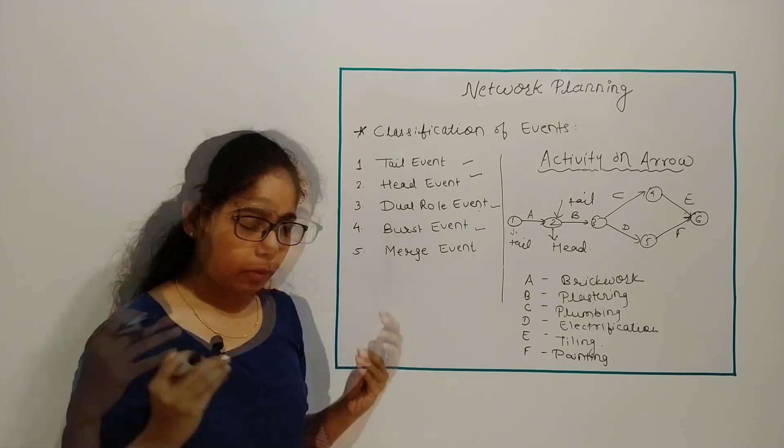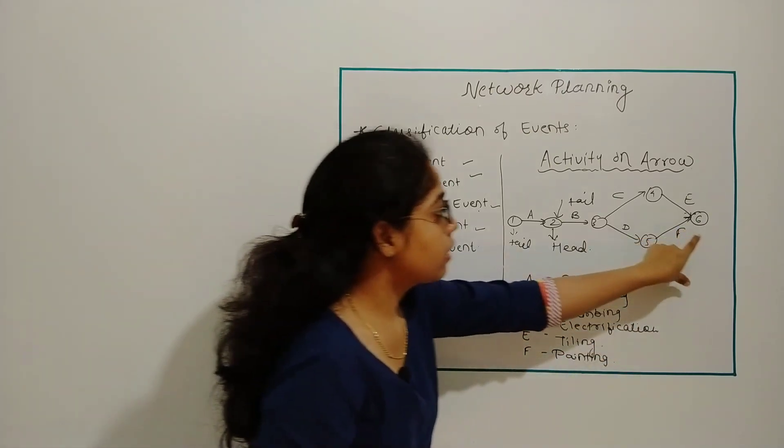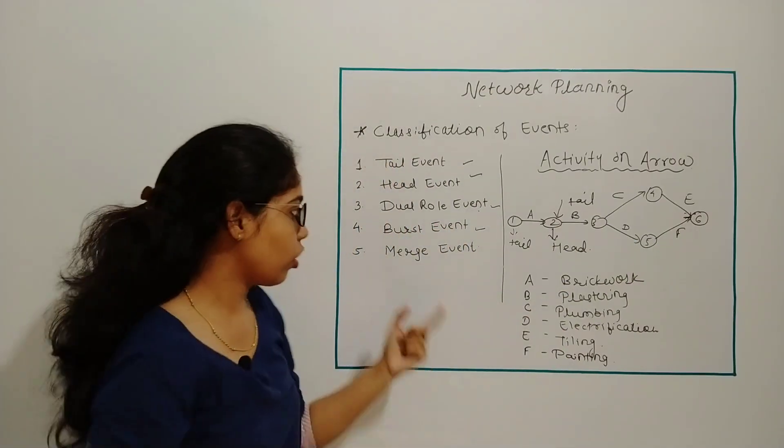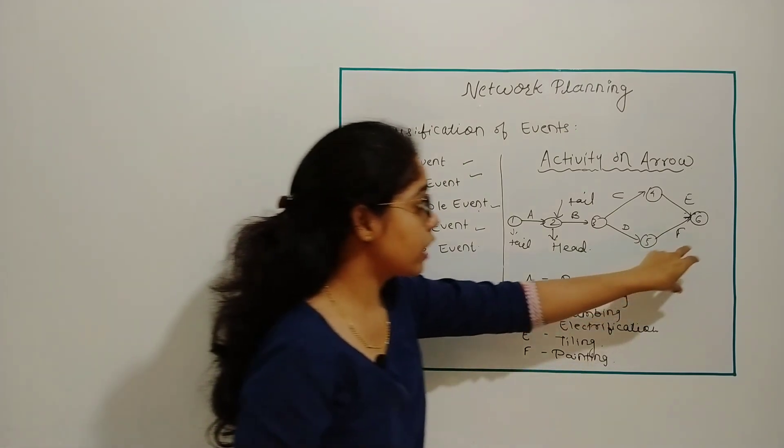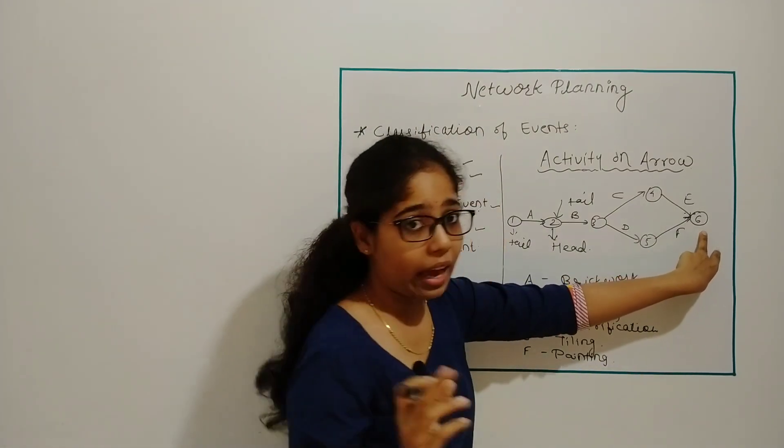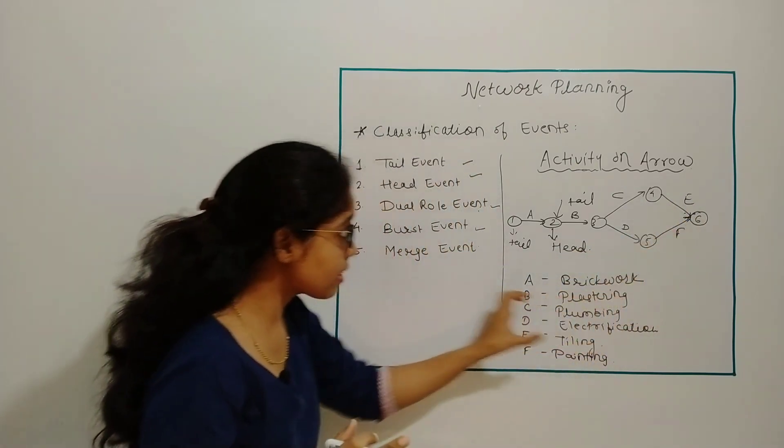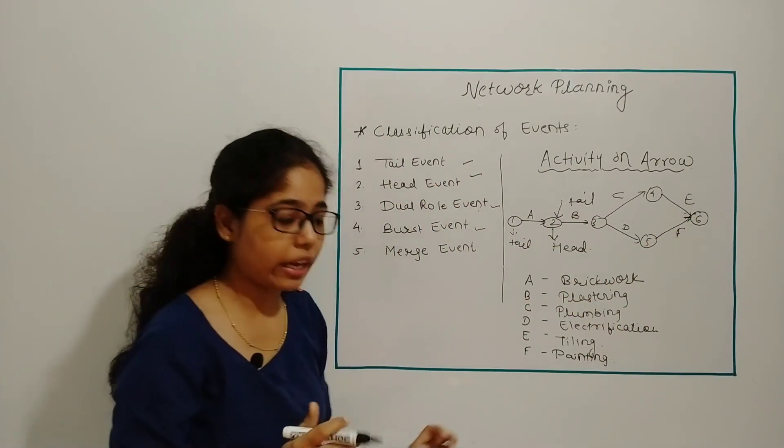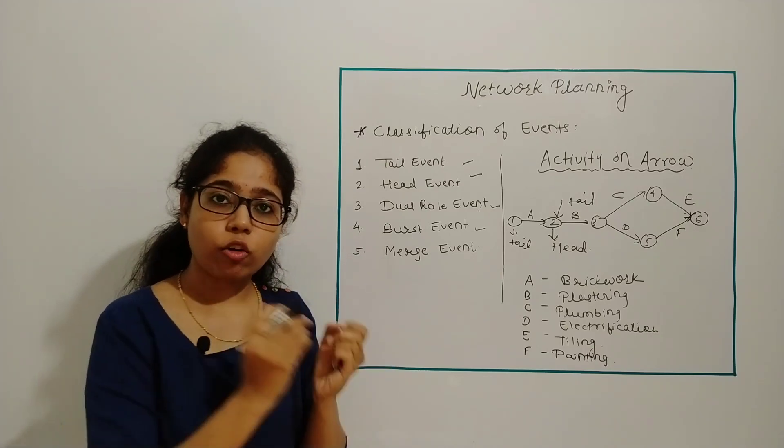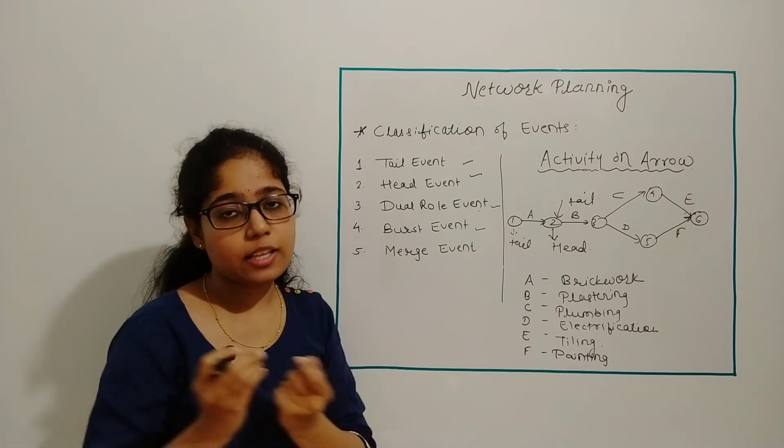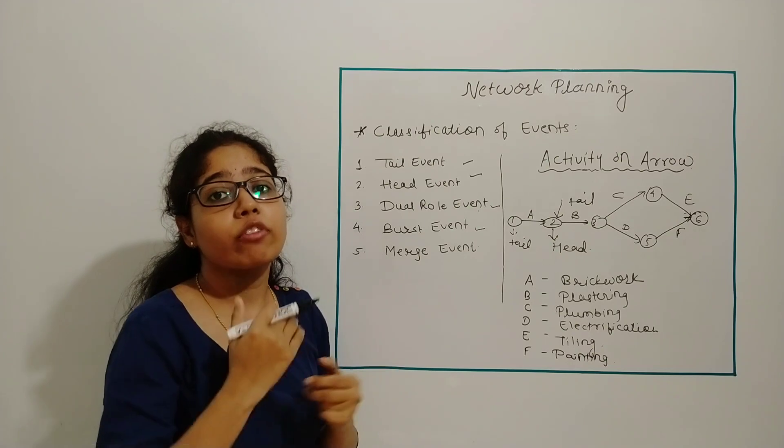Last is your merge event. If many activities are merging at a single point, then that single point is called merge event. So here node 6 will act as merge event for activity E and F. This is the network planning or network diagram which is useful for critical path method as well as PERT analysis, from which we have to find out the total duration of the project.